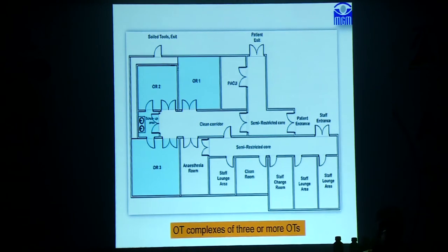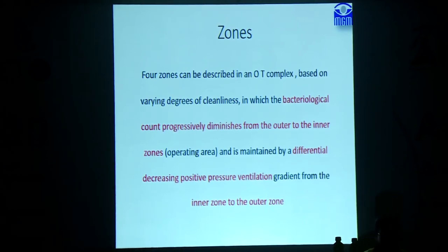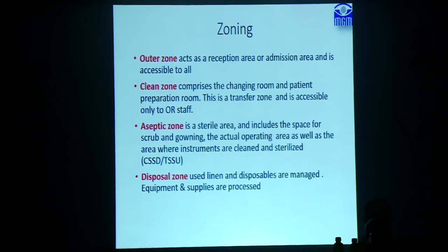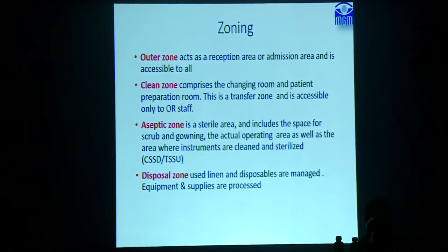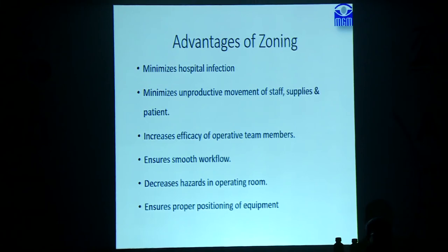There are four zones in the OT based on infection control, varying on the degree of cleanliness in which bacteria progressively diminish from the outer to the inner zones. This is maintained by a differential decreasing positive pressure ventilation gradient from the inner zone to the outer zone. The outer zone acts as a reception and admission area accessible to all. The clean zone comprises the changing room and patient preparation room, accessible only to staff. The aseptic zone is sterile and includes scrub, gowning, the actual operating area, and instrument sterilization. The disposal zone manages linen and disposables.